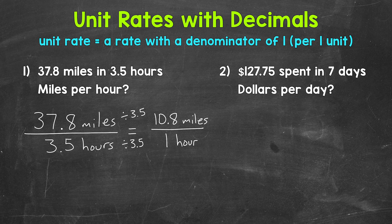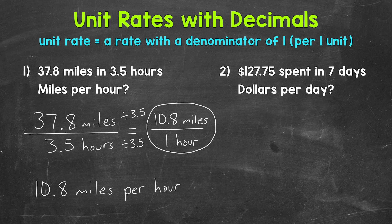And that's our unit rate, 10.8 miles per 1 hour, or 10.8 miles per hour. And we can also write this as 10.8 miles per hour. So this is our unit rate in fractional form. And then we can also write it like this.